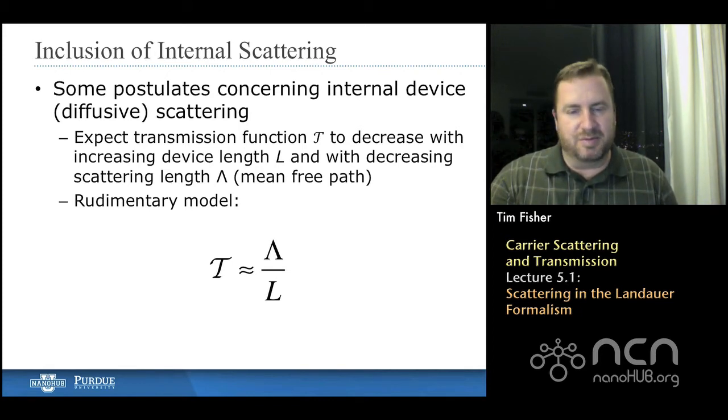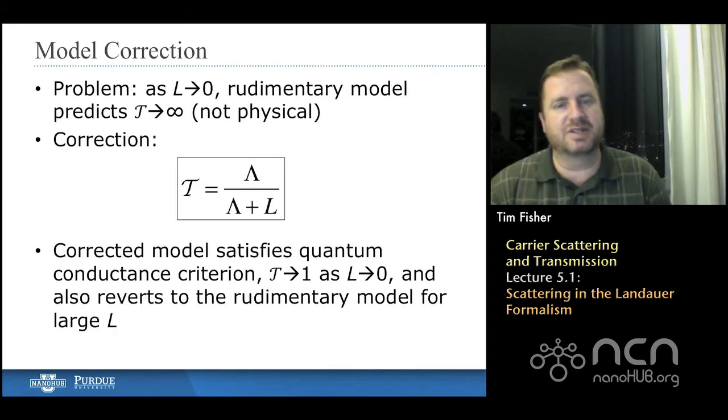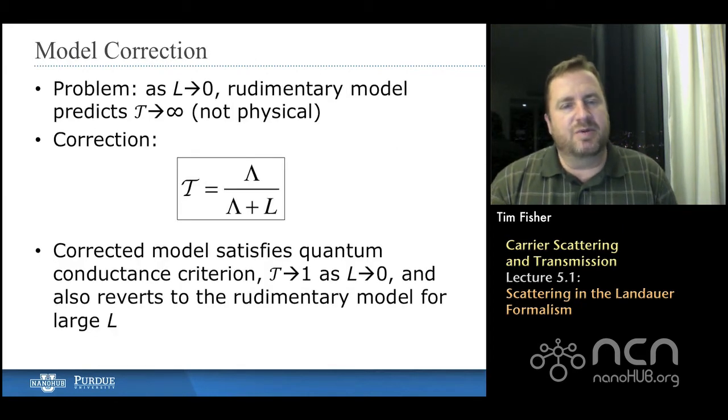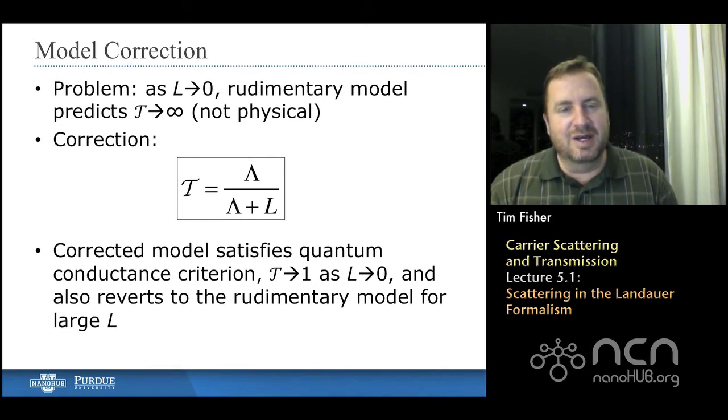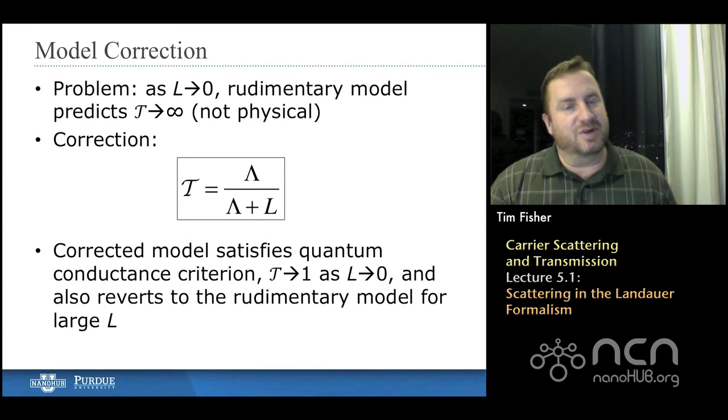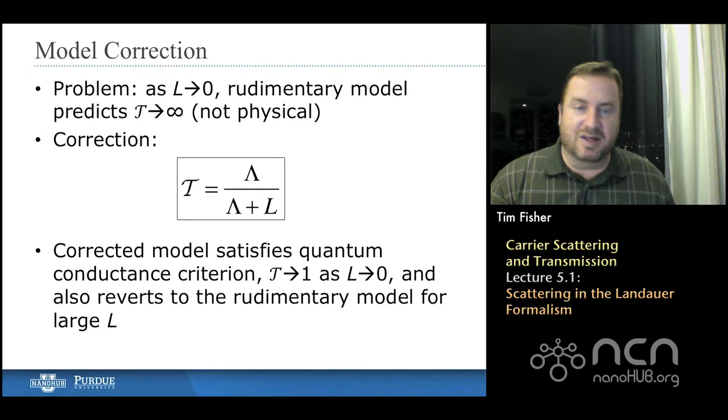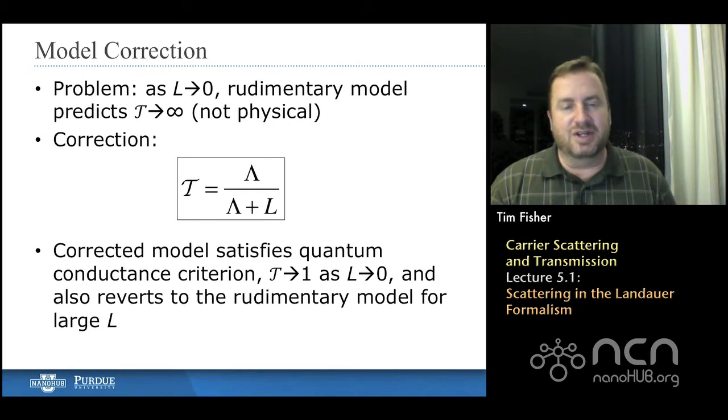We'll go back and plug this in a little bit later. But there's a problem with this approximation. And that shows up on this slide. The problem is that as the device length goes to zero, that model that we just had on the previous slide would suggest that the transmission function goes to infinity. But as I said before, the transmission function, you can kind of think of it as a probability, and so it can't go to infinity.